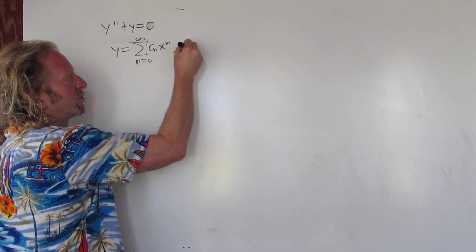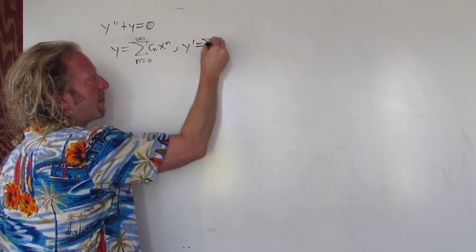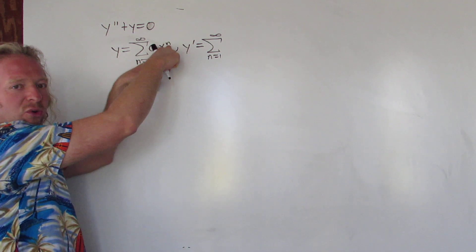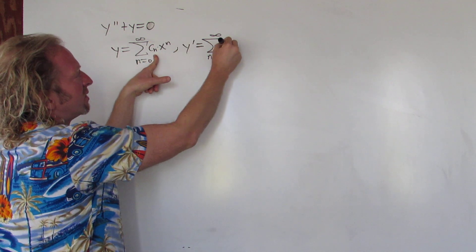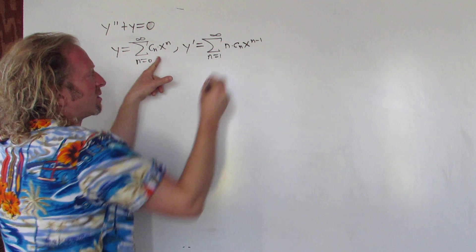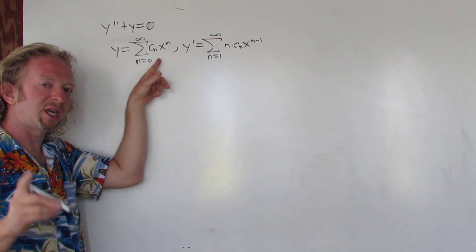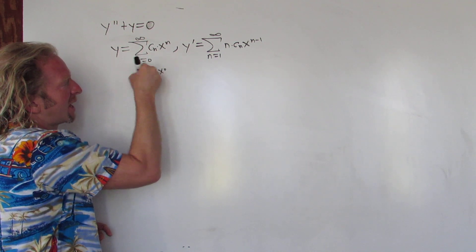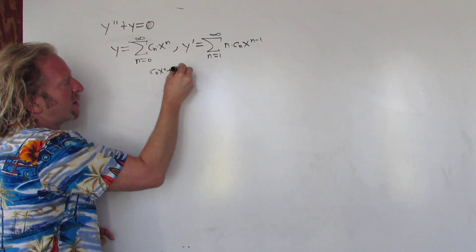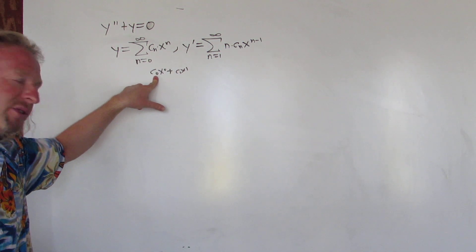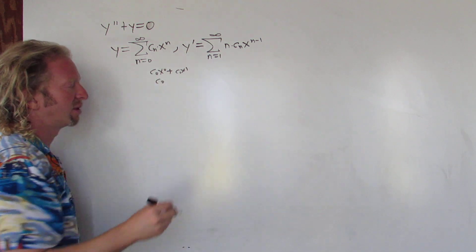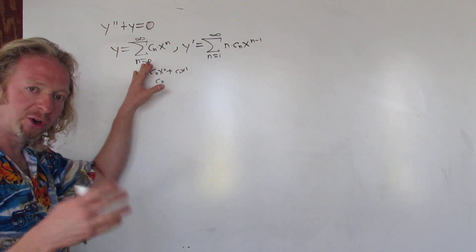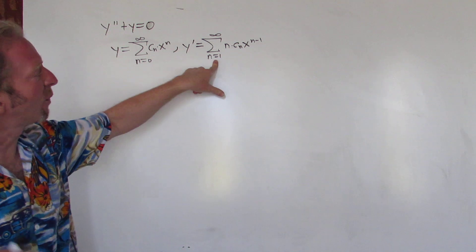We have to take derivatives. So let's take the first derivative — y prime. When we take the first derivative we're going to start at 1, and I'll explain why in a minute. c sub n is constant so it hangs out, then you just use the power rule. You bring the n down so you get n times c sub n and you subtract 1. If you plug in 0 to the series, you get c sub 0 times x to the 0, which is just c sub 0 — it's a constant. So when you differentiate it, it goes away. That's why we start at 1.